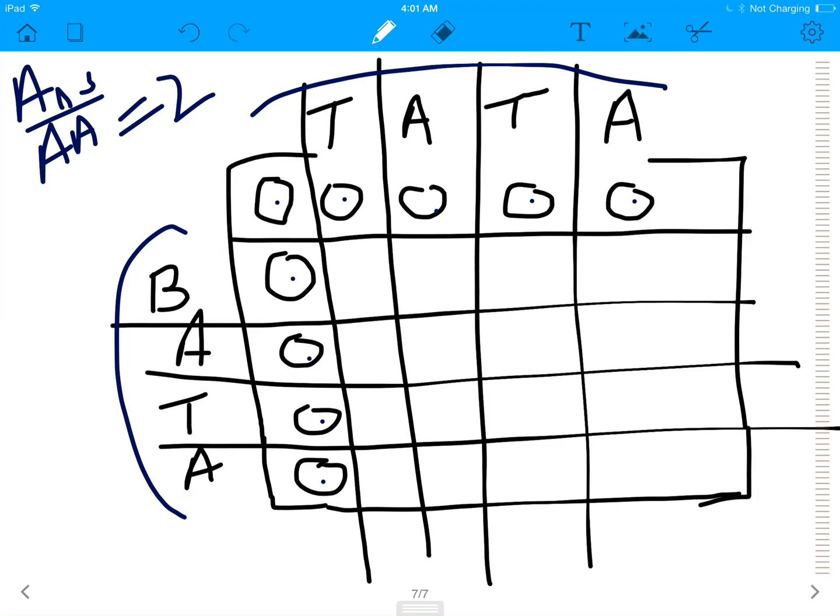So first, you try to match b and t. So what do you get? b and t are non-similar letters. They're not the same letters. So, you go on your left, and you go on your top, and you find the maximum number. So both of them are zero, so maximum of zero and zero is zero itself.